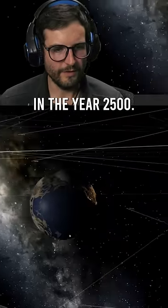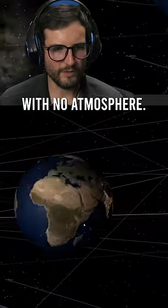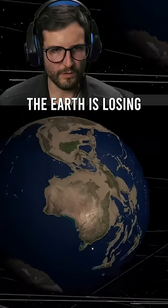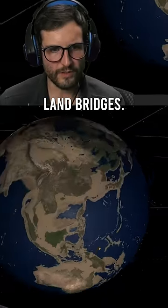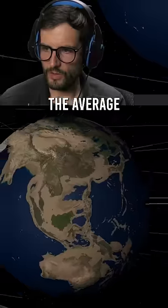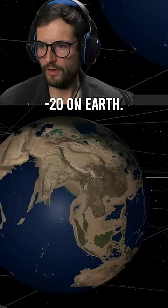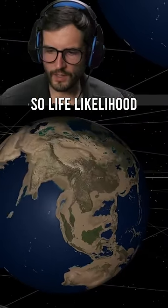Let's take a look at the Earth with no atmosphere. Look at this, the Earth is losing its water. All these land bridges, you know what I mean, they're all back. Look at that. So the average temperature is now minus 20 on Earth. Oh okay, so life likelihood is zero.